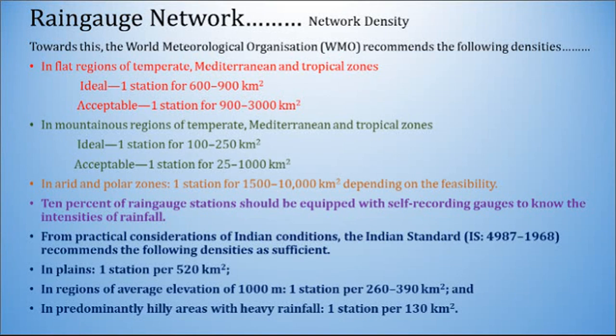Here WMO mentions that 10% of rain gauge stations should be equipped with self-recording gauges to know the intensities of rainfall. At least 10% of all rain gauge stations should be self-recording type. For practical considerations of Indian conditions, the Indian standard IS 4987-1968 recommends the following densities as sufficient: in plain regions one station per 520 km², in regions of average elevations of 1000 meter one station per 260 to 390 km², and in predominantly hilly areas with heavy rainfall one station per 130 km².